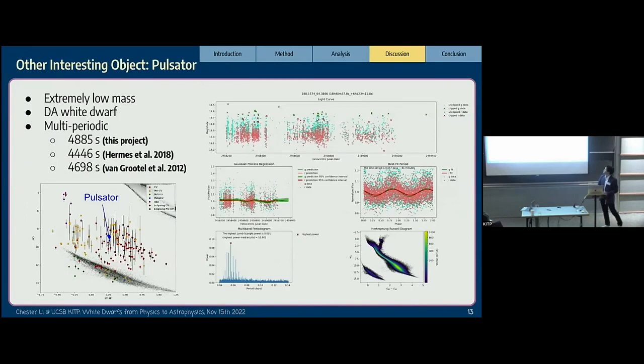We found many interesting objects. This is a pulsator, an extremely low mass DA white dwarf. It's multi-periodic. We found a period of about 4446 seconds, but other groups have found different periods. If you look at our code, you can see there are actually a few different strong signals around the peak. ZTF definitely picked up some of this period variation.